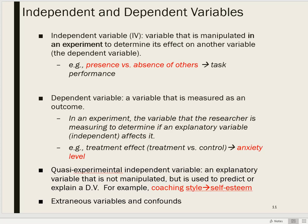Let's say we wanted to look at the effects of the presence versus absence of others on performance on some task — let's say typing — whether or not you're a faster and more accurate typist in the presence versus the absence of other people. The independent variable there would be whether or not people are present. The dependent variable would be, let's say, typing speed. So we might manipulate whether or not people are present and see how that affects typing speed. We could also have another dependent variable, which is typing accuracy. A dependent variable is the variable that is measured to see if the independent variable has an effect on it or is at least related to it.